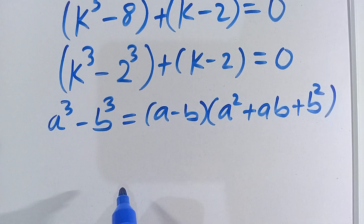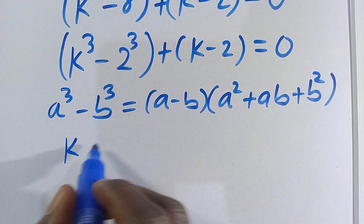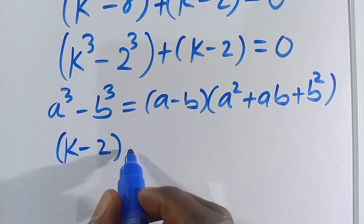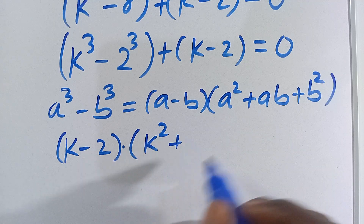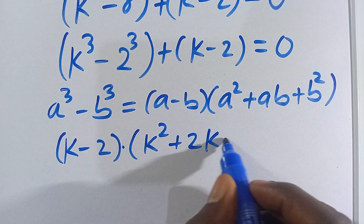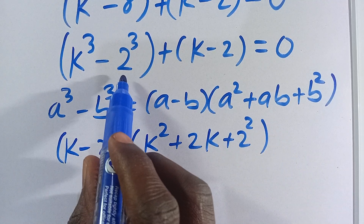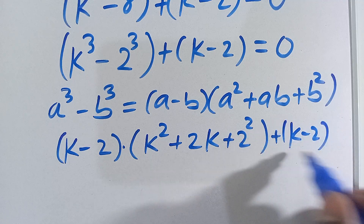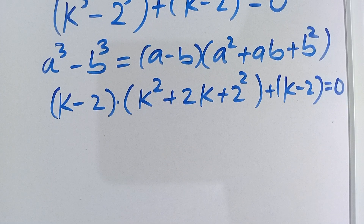Applying the difference of cubes to k³ minus 2³, where a equals k and b equals 2, we get k minus 2, multiplied by k² plus 2k plus 2², which is 4. So we have that factored expression plus k minus 2 in parentheses equals 0.